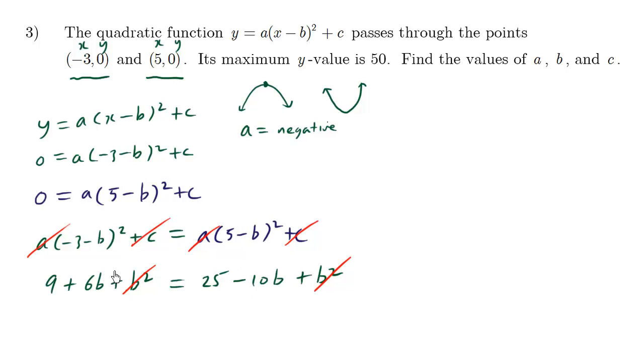Going to move this negative 10b to the left, becomes a positive 10b. So positive 10b plus 6b becomes 16b equals 25 minus 9. This 9 went over, so it changes signs. So what we have here is 16b equals 16. Divide both sides by 16. We get b equals 1.